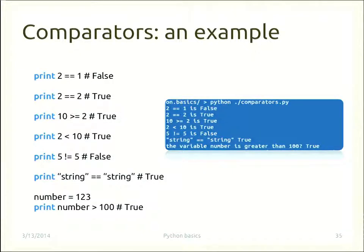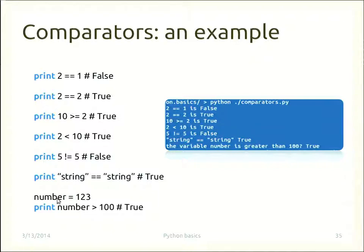Examples: print(2 == 1) is False; print(2 == 2) is True; print(10 >= 2) is True; print(5 != 5) is False; print('string' == 'string') is True. You can compare integers and floating point numbers, and also strings. You can also compare variables — for example if a variable holds 123, then 123 > 100 prints True.